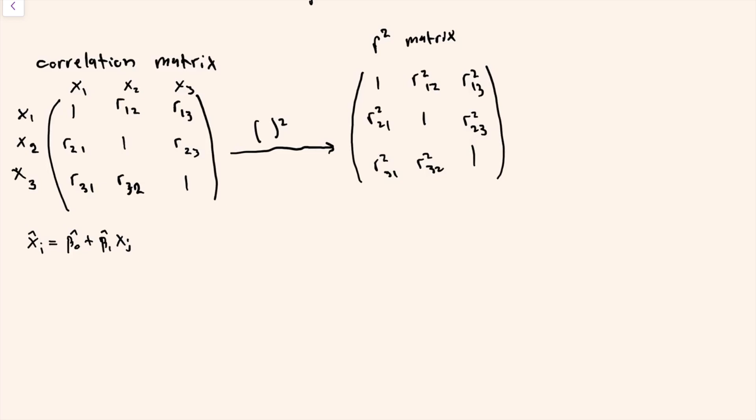Similarly, the r-squared matrix neatly summarizes the proportion of variation in one variable explained by either of the others. For example, one value would represent the proportion of variation in x3 explained by x1, and another value represents the strength and direction of the linear relationship between x3 and x1.